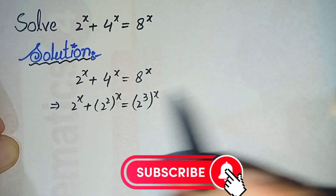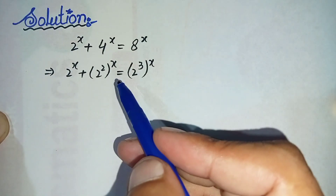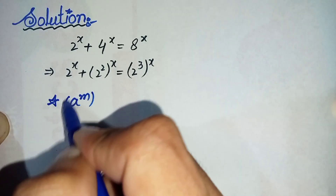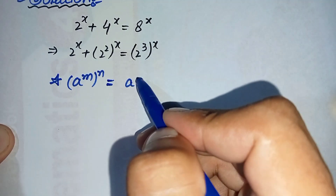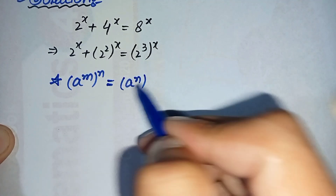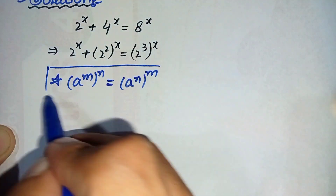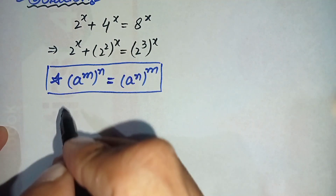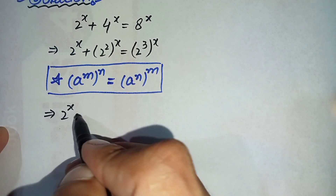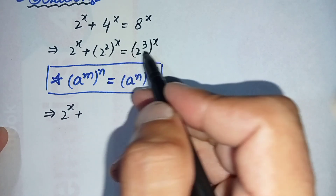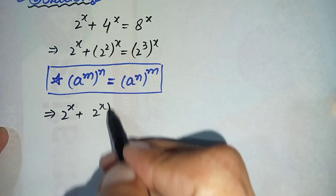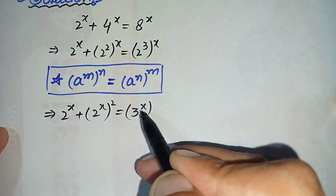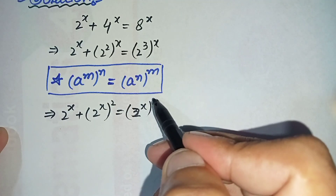In the next step, we will use a famous exponential property: a raised to power m, whole raised to power n, can also be written as a raised to power n, whole raised to power m. By using this property, we exchange the powers, so it becomes 2 raised to power x, plus 2 raised to power x all squared, equal to 2 raised to power x whole cubed.